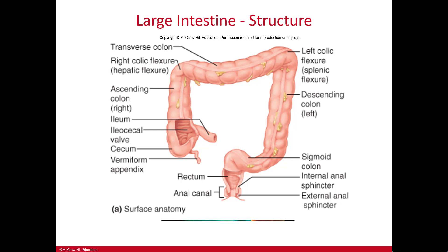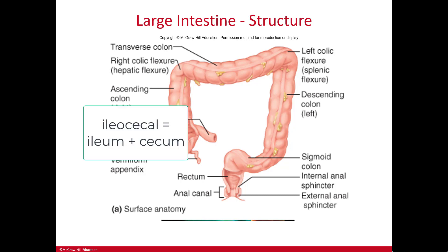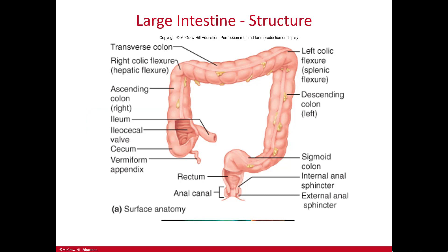Where the large intestine joins the small intestine there is a valve called the ileocecal sphincter or ileocecal valve. Ileocecal means it forms a junction between the ileum and the cecum. It is a one-way valve that allows chyme to pass from the small intestine into the large intestine. The cecum is the first section of the large intestine, forming a pouch in the lower right quadrant.